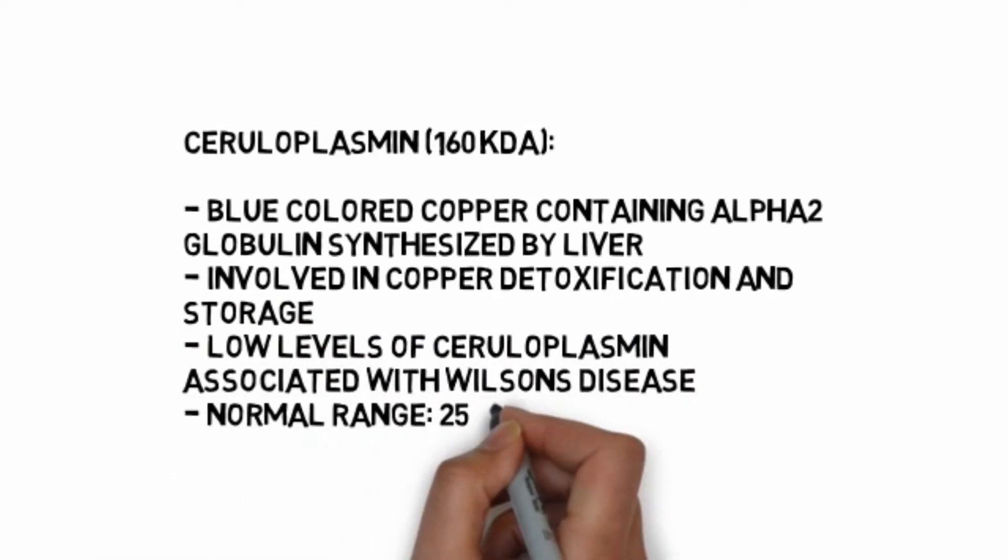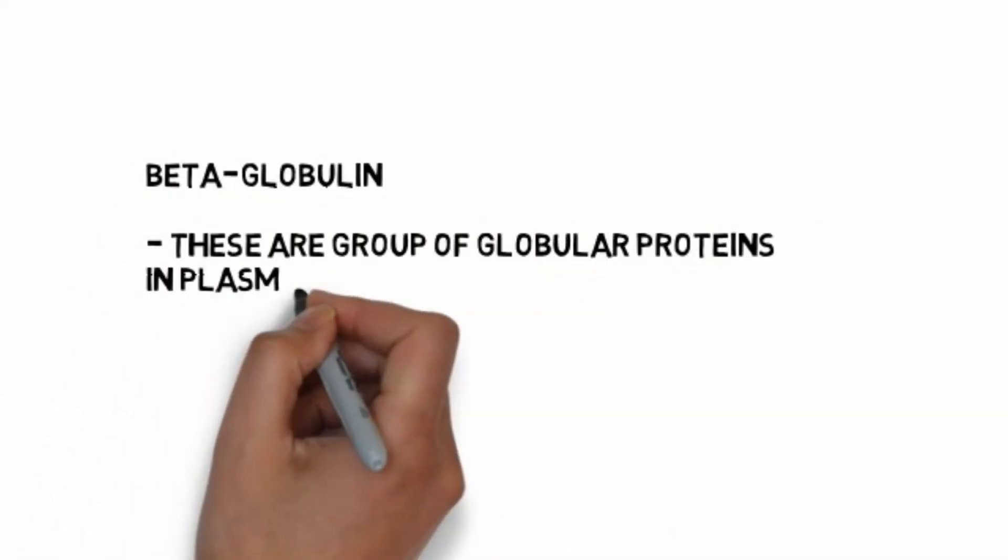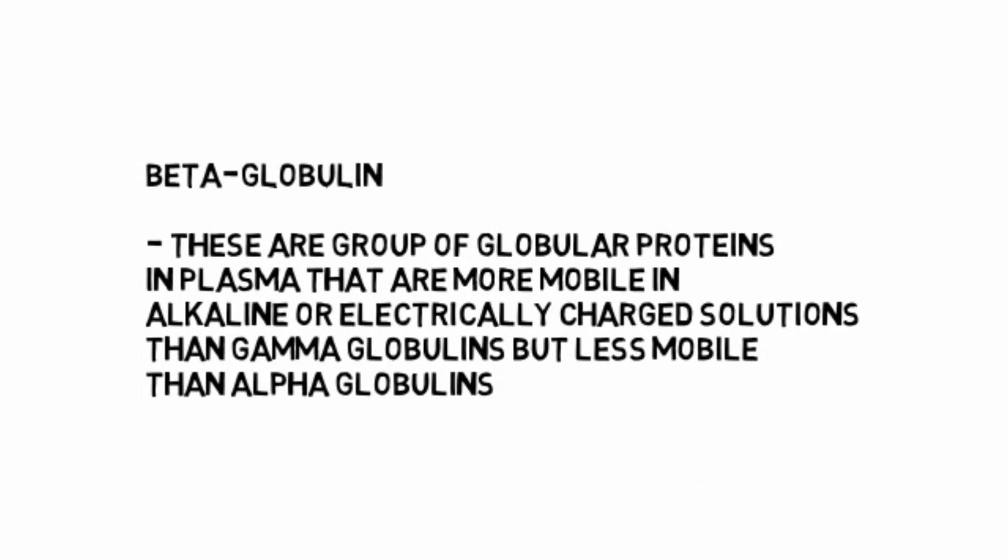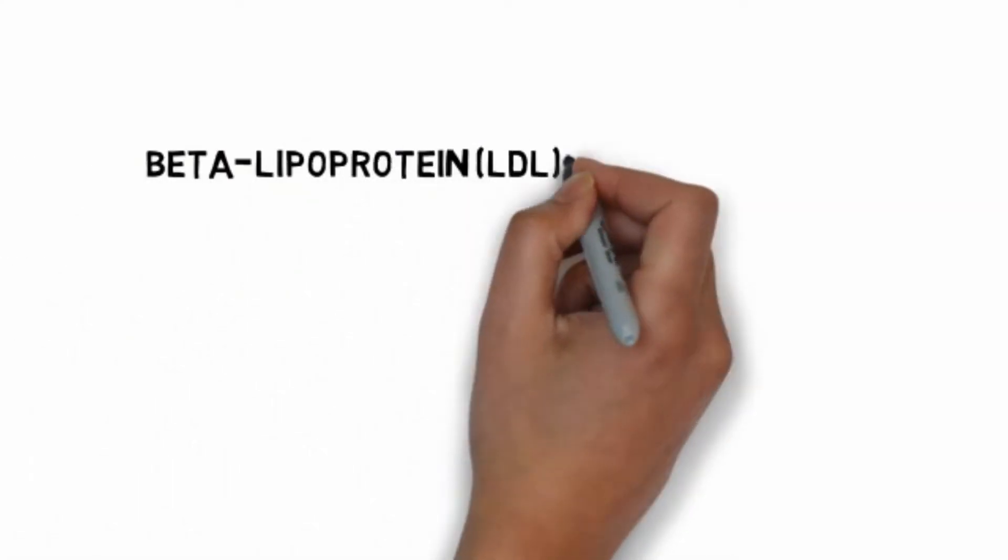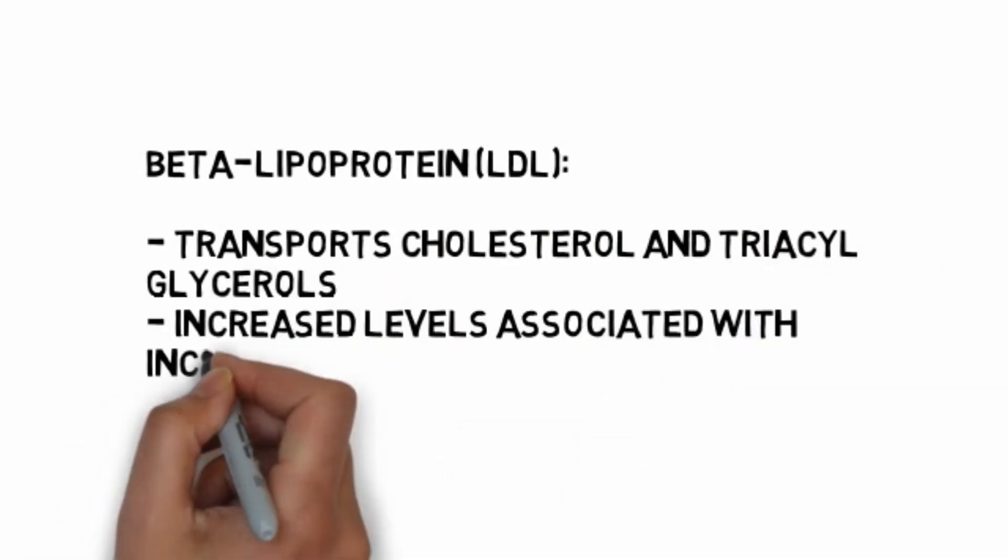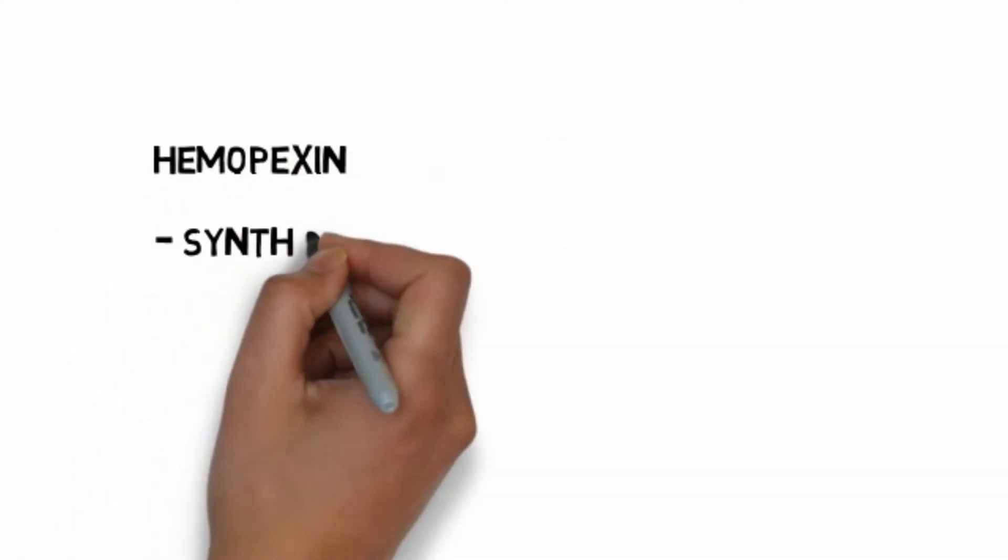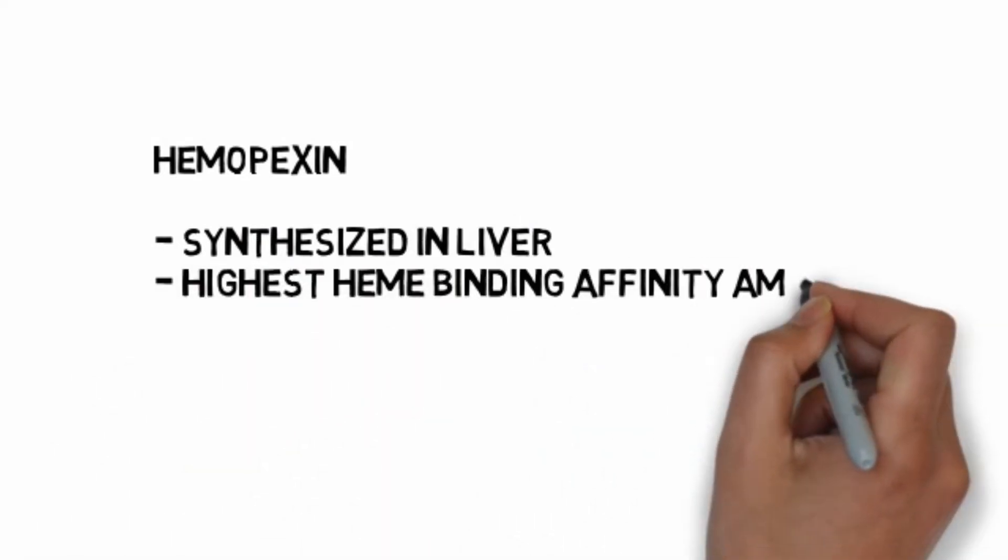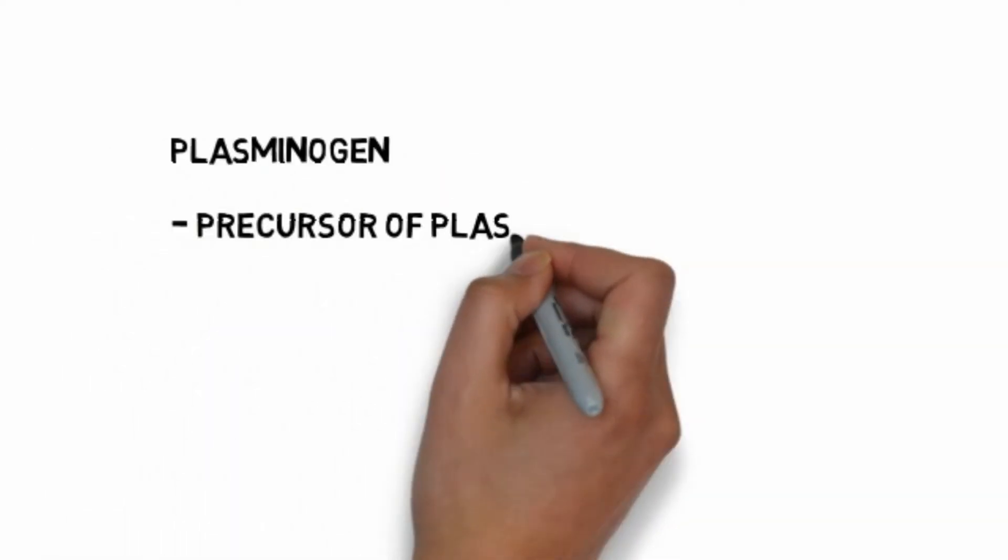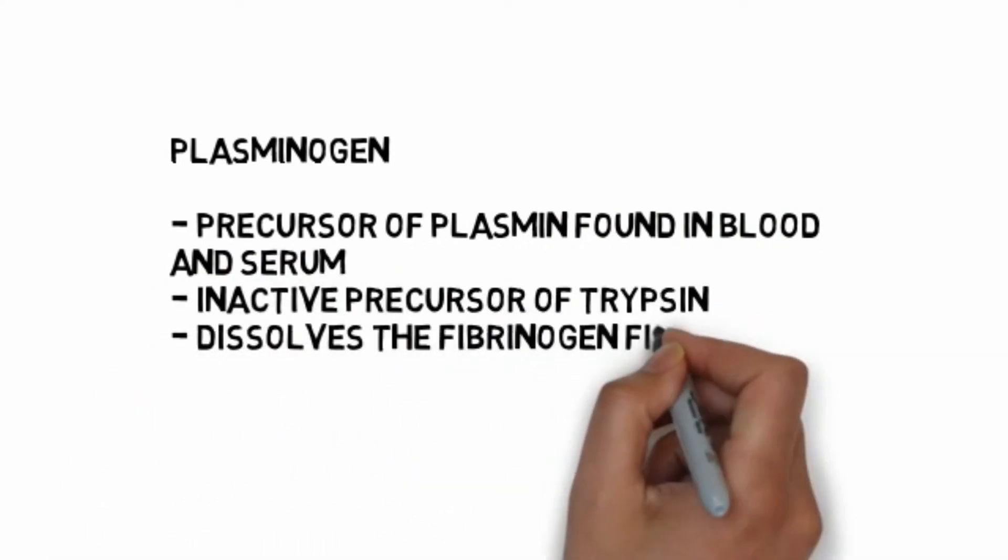Beta globulins are group of globular proteins in plasma that are more mobile in alkaline or electrically charged solutions than gamma globulin but less mobile than alpha globulin. Beta lipoprotein, low-density lipoprotein, transports cholesterol and triacylglycerols. Increased levels are associated with increased risk of coronary artery disease and atherosclerosis. Hemopexin is synthesized in liver and has highest heme binding affinity among plasma proteins, helping maintain and recycle the iron pool. Plasminogen is precursor of plasma plasmin found in blood and serum, an inactive precursor that dissolves the fibrinogen fibers which entangle blood cells in blood clot during fibrinolysis.